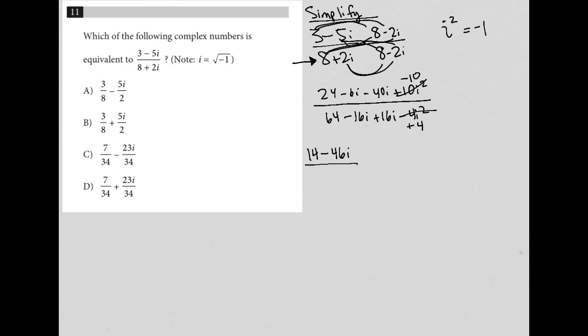When I simplify my denominator, the negative 16i and positive 16i cross out, and 64 plus 4 is 68.